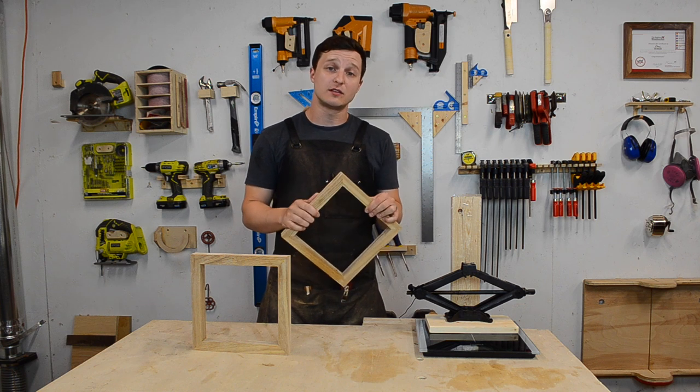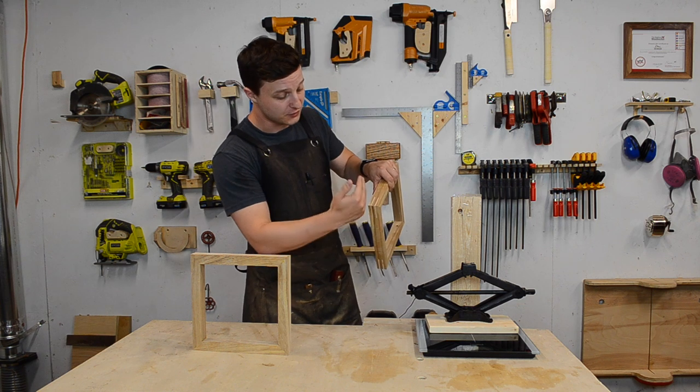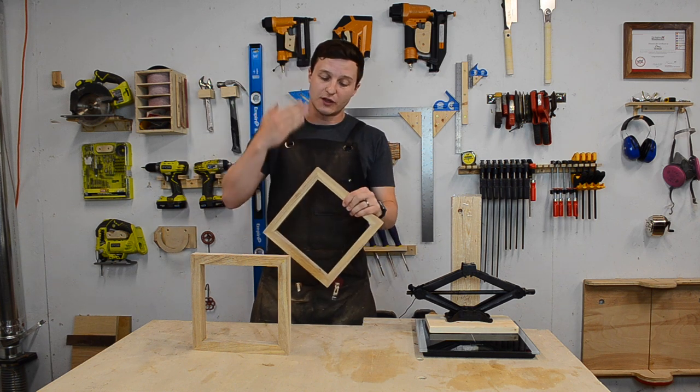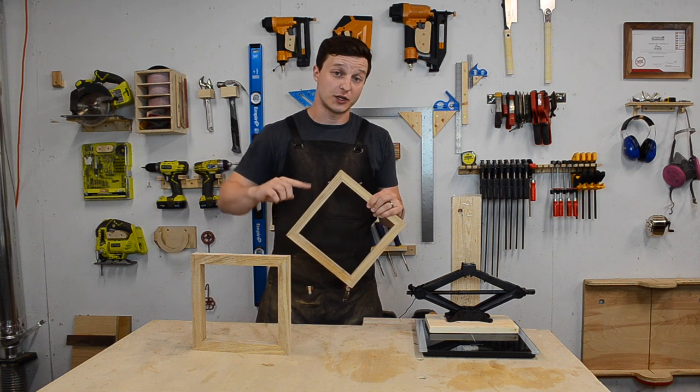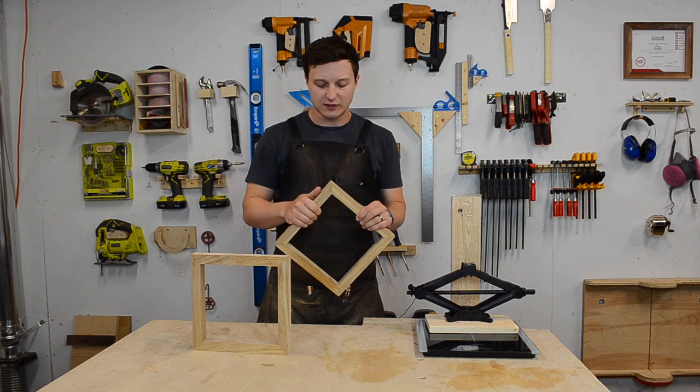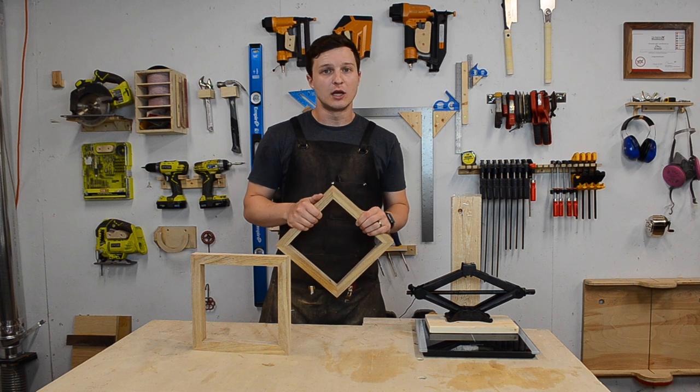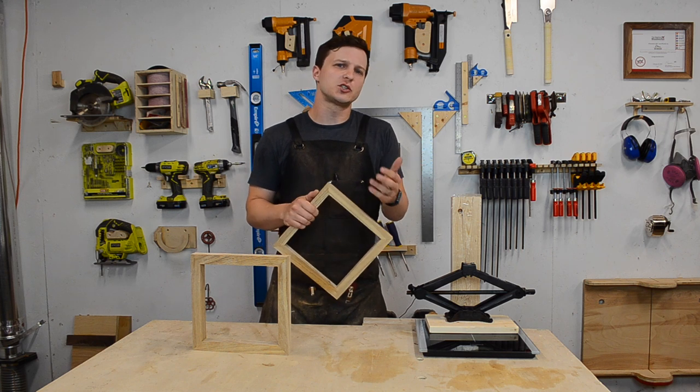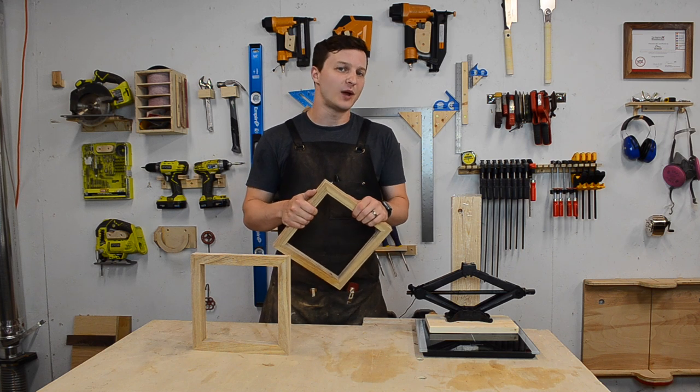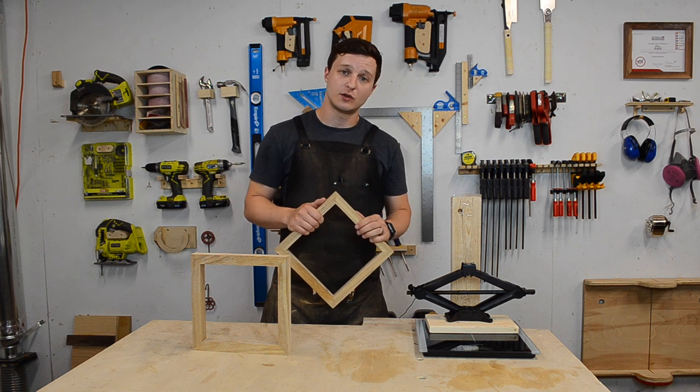You're taught that the way to make this joint stronger is to cut a slot or two in the side, insert a thin piece of wood with a differing grain direction called a spline, and that's supposed to make the joint stronger. But no one ever questions just how much stronger does a miter joint become when you add a spline to it. That's what I'm going to answer in this video.